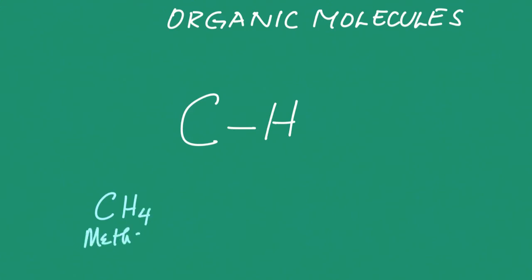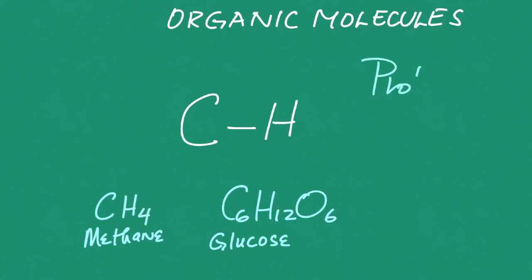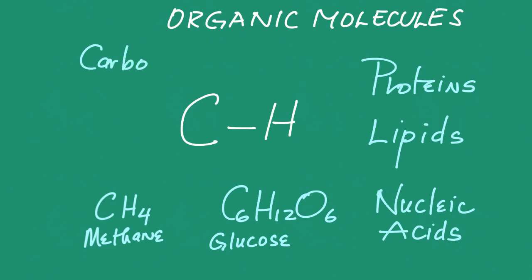What's the difference between an organic molecule and an inorganic molecule? All organic molecules will have a carbon and a hydrogen with a covalent bond in between. Methane, which is CH4, is an organic molecule because it has carbon and hydrogen. Glucose is an organic molecule because it also has carbon and hydrogen. There are four major organic molecules in the body and they are proteins, lipids, nucleic acids, and carbohydrates. We call these macromolecules because there are many organic molecules strung together.